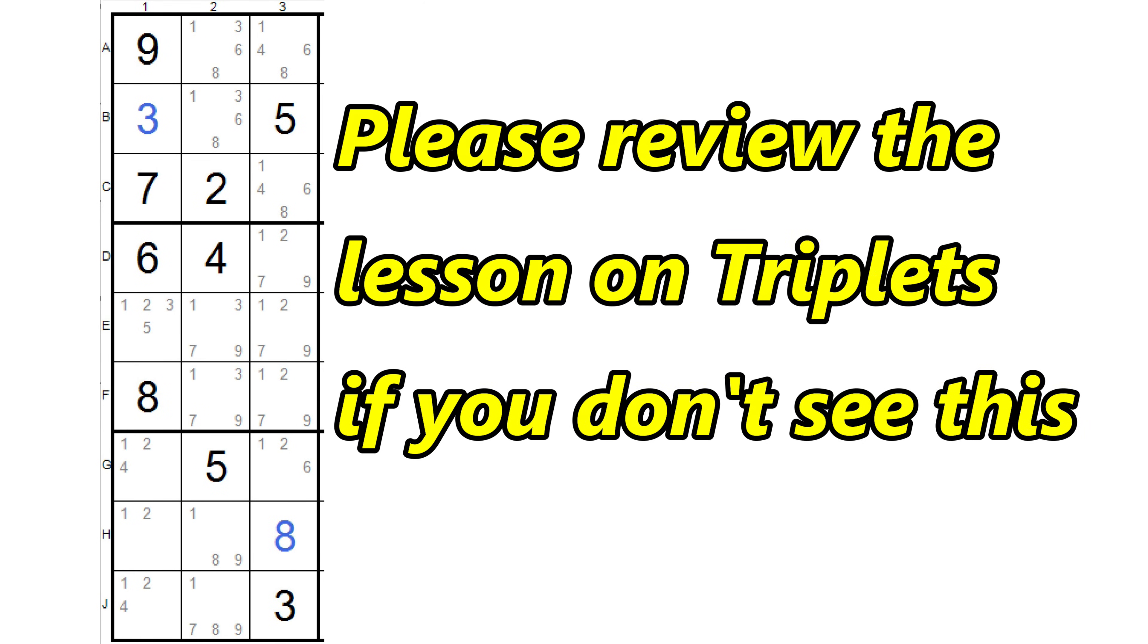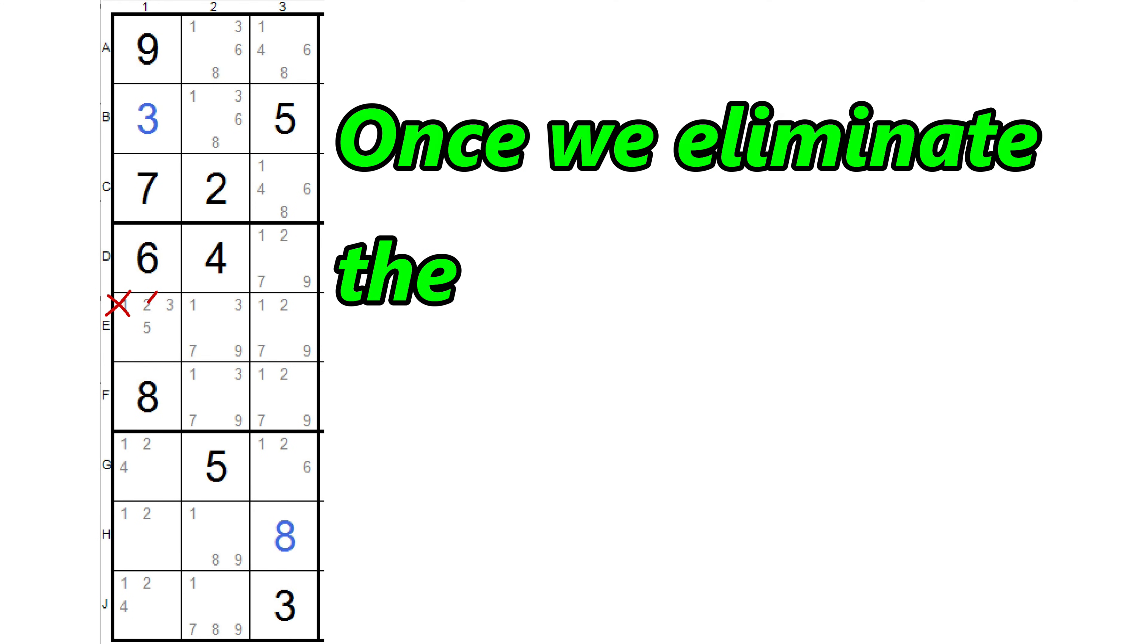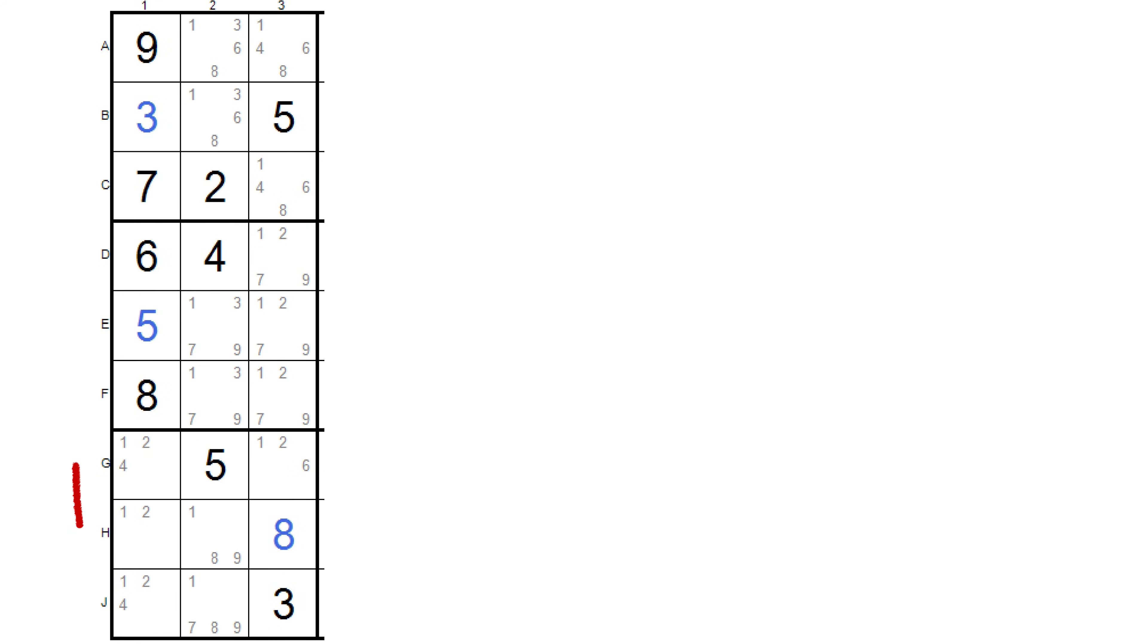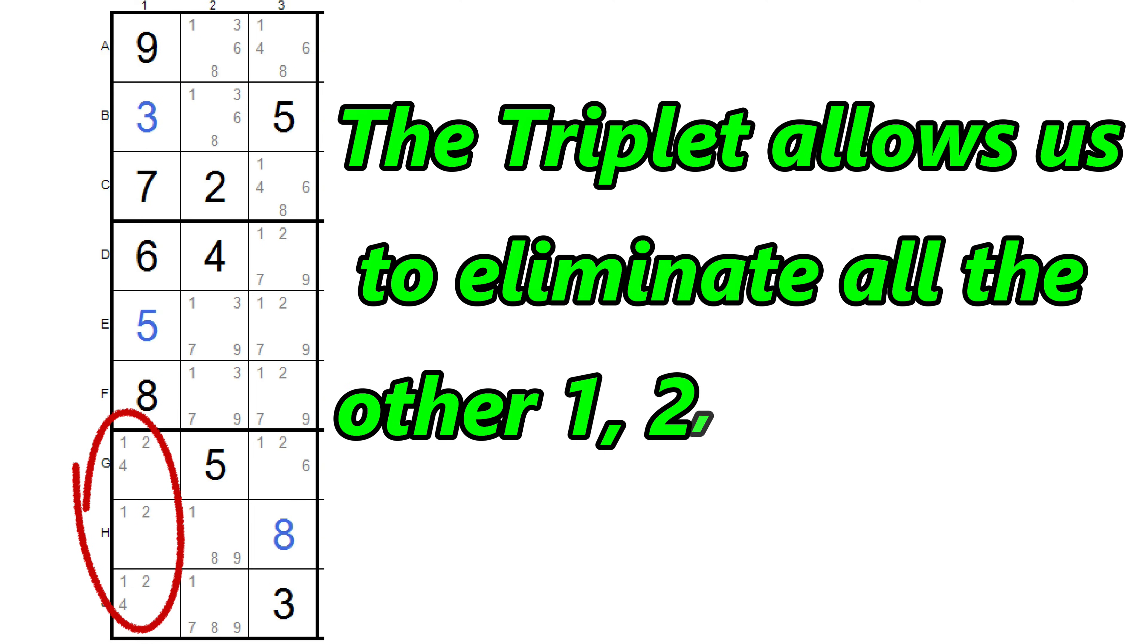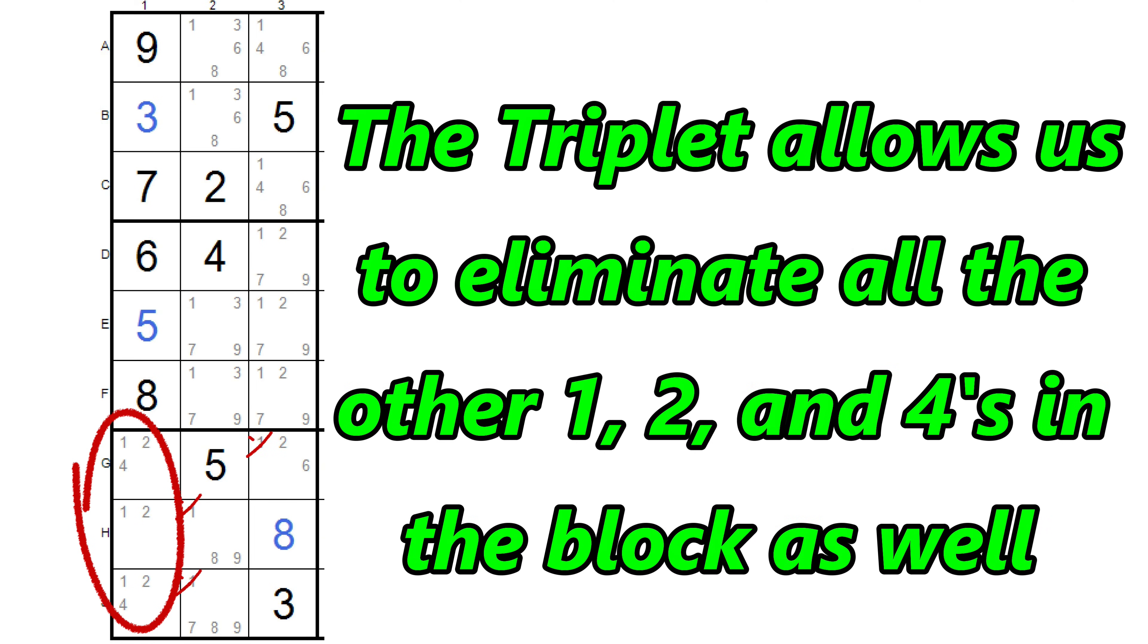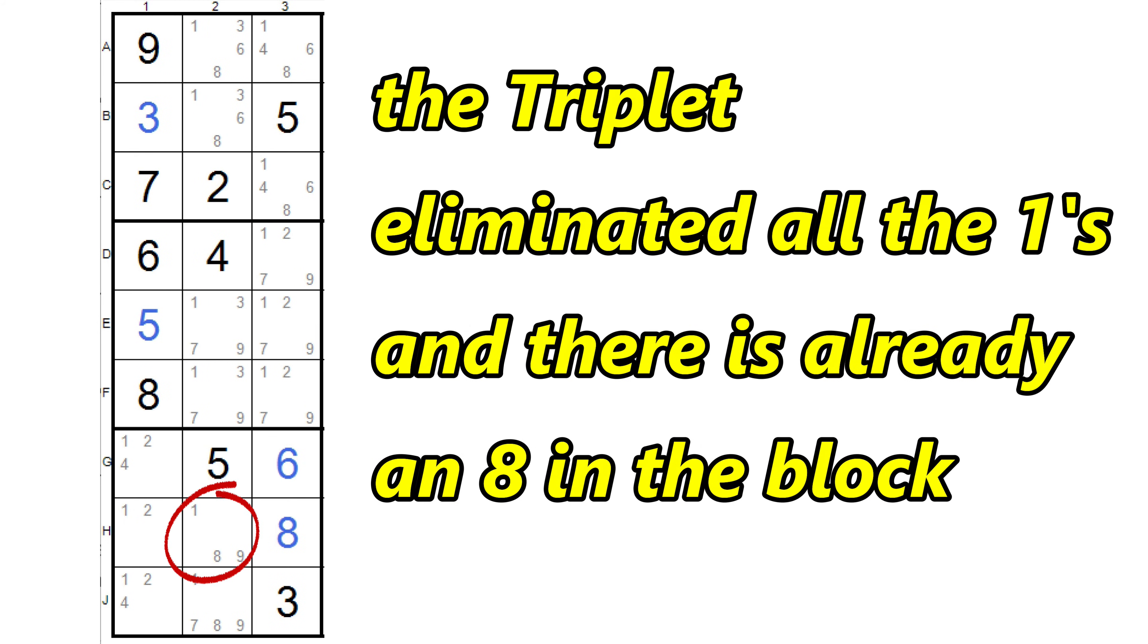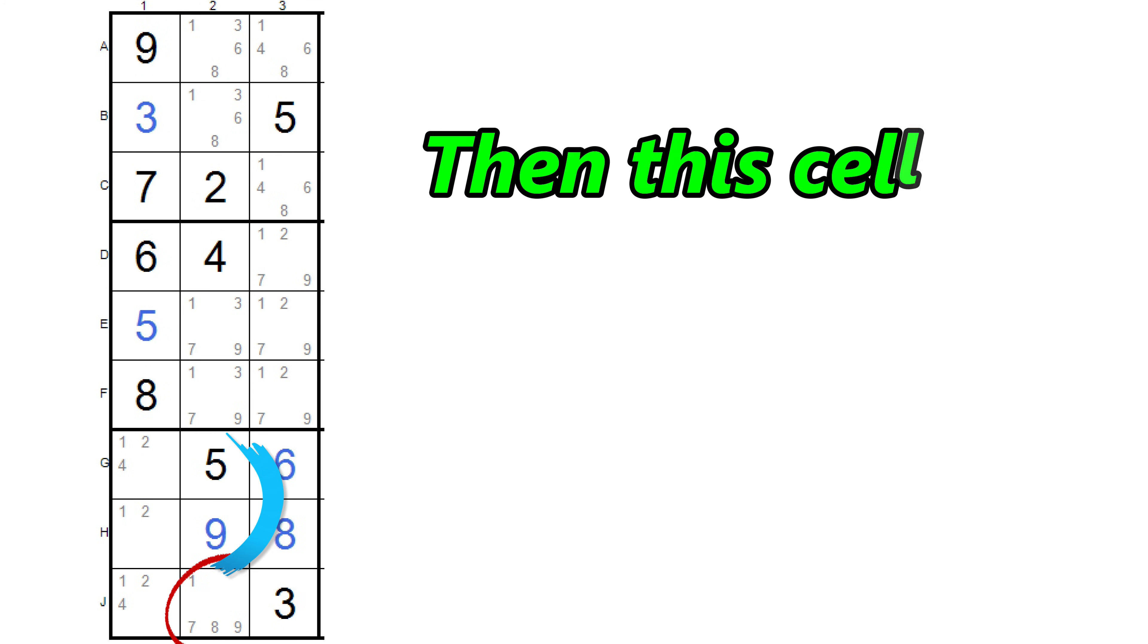The triplet also eliminates the 1 and 2 from here, and we just placed a 3, so we can eliminate that. So now this cell becomes a 5. And this triplet also allows us to eliminate all the other 1s and 2s from elsewhere in the block. So now this cell is a 6, and now this cell can't be a 1 or an 8, so it must be a 9, and then this cell is a 7.